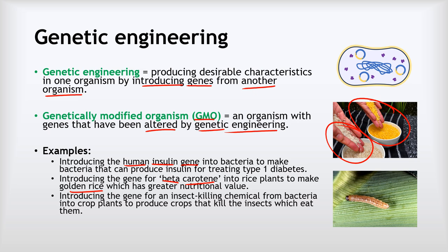The last example is introducing the gene for an insect-killing chemical — naturally found in some bacteria — into crop plants grown on farms, so the crops produce chemicals that kill insects that might try to eat them. This is often called BT corn, with BT standing for Bacillus thuringiensis, the bacterium from which this chemical has been taken. BT corn is grown quite widely in some countries and significantly reduces how much pesticide they need to use.